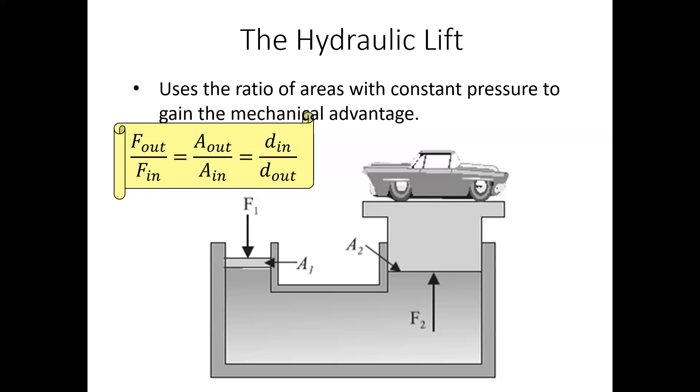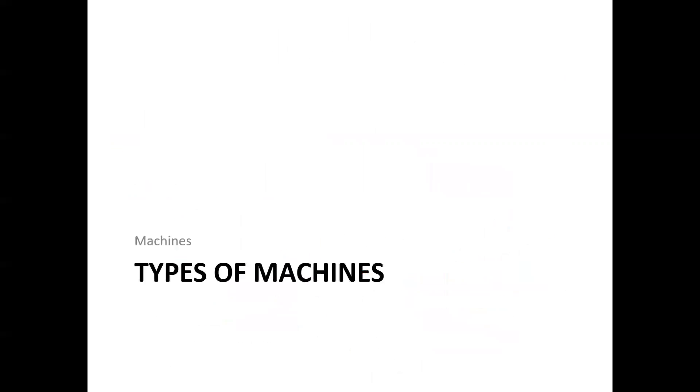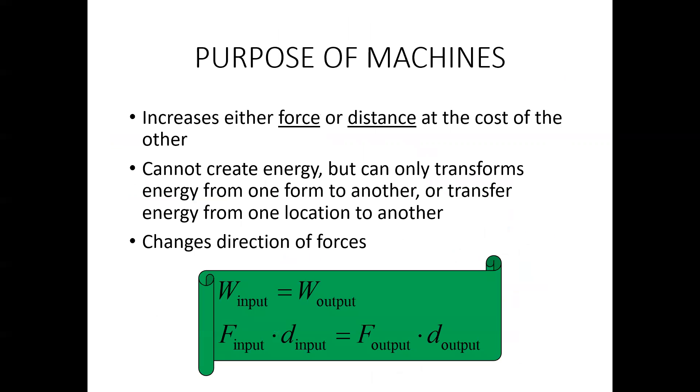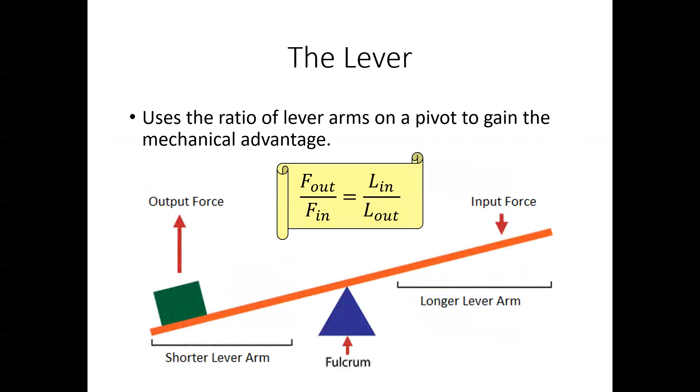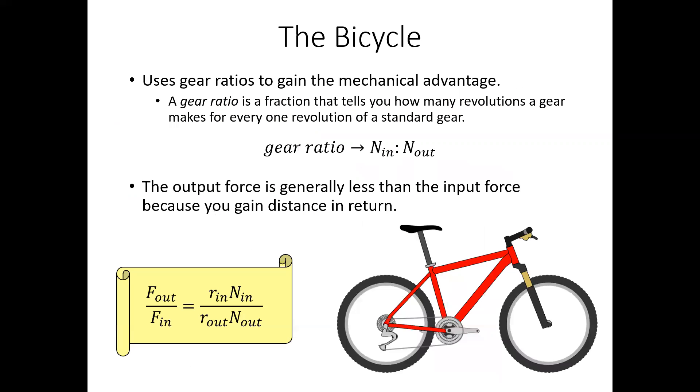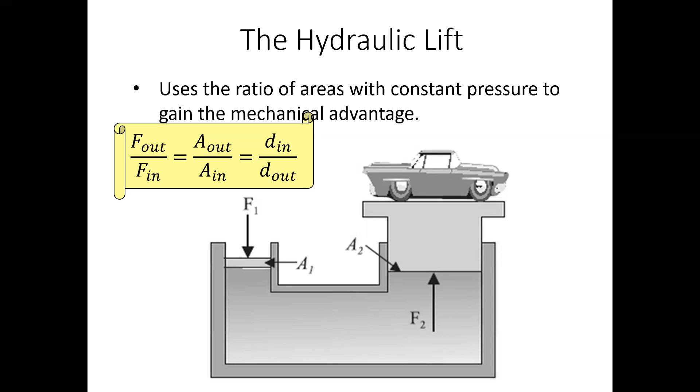And so that's basically all you have there. You have the basic purpose of machines, four types of machines: levers, pulleys, the bicycle, and the hydraulic lift.